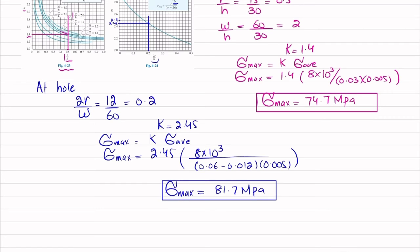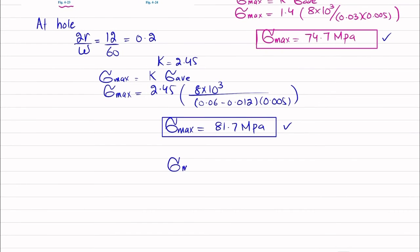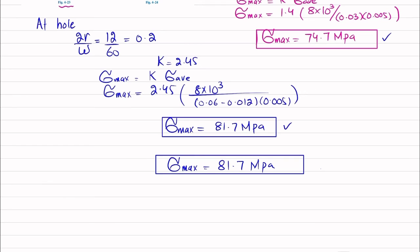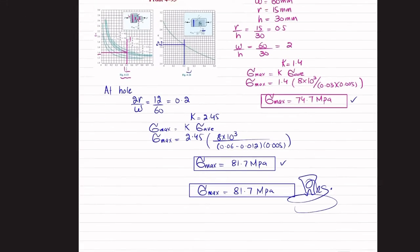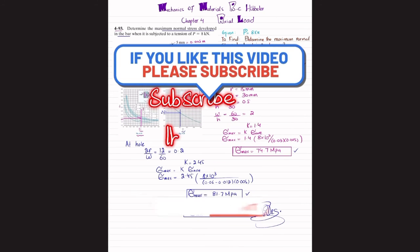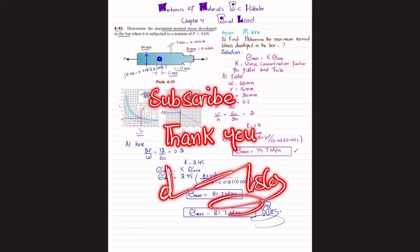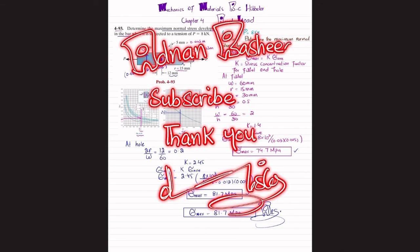Comparing both results: the fillet produces a maximum stress of 74.7 MPa and the hole produces 81.7 MPa. Since the question asks for the maximum normal stress developed in the bar, we select the larger value. The answer is 81.7 MPa. That concludes problem 4-93. Please subscribe, hit the bell icon, share the video, and feel free to ask questions in the comments.